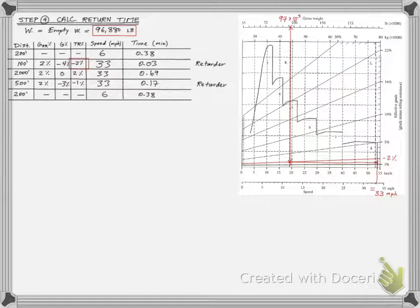We complete the calculations for the other segments by using the rimple chart for the third segment and the retarder chart for the fourth segment. We add all these times to get 1.65 minutes total return time.